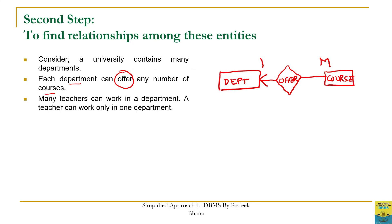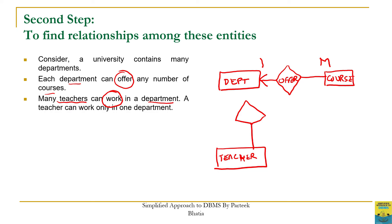Moving to the third requirement: 'Many teachers can work in a department.' Here we have another noun, teacher, so we create a new entity set rectangle for teacher. There are two nouns — teacher and department — connected by the verb 'work', so we create a relationship named 'work' and attach it to both entities. Reading the line to determine cardinality: many teachers can work in one department, and a teacher can only work in one department.